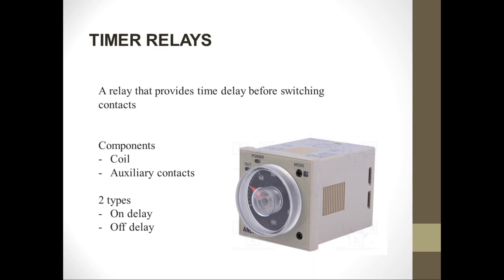Once the on-delay timer is de-energized — that is, the supply is cut off — the auxiliary contacts immediately go back to their initial position. For the off-delay type timer, when the coil is energized with the rated voltage, the auxiliary contacts automatically switch or change position.